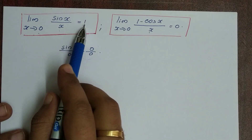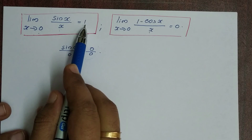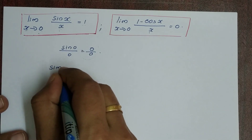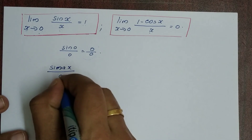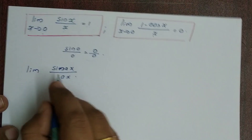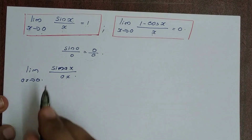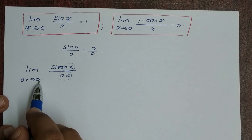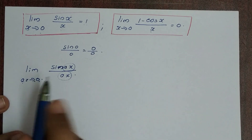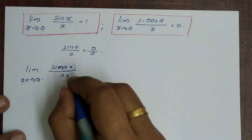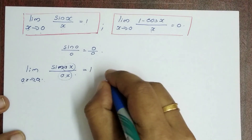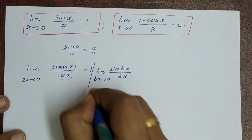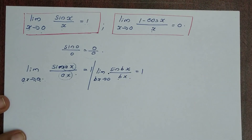Let's see the proof. Limit x tends to 0, sin x by x is equal to 1. Now the term is x. If we apply limit directly, sin bx by bx — limit bx tends to 0, sin bx by bx is equal to 1. That is 1 equals 1.